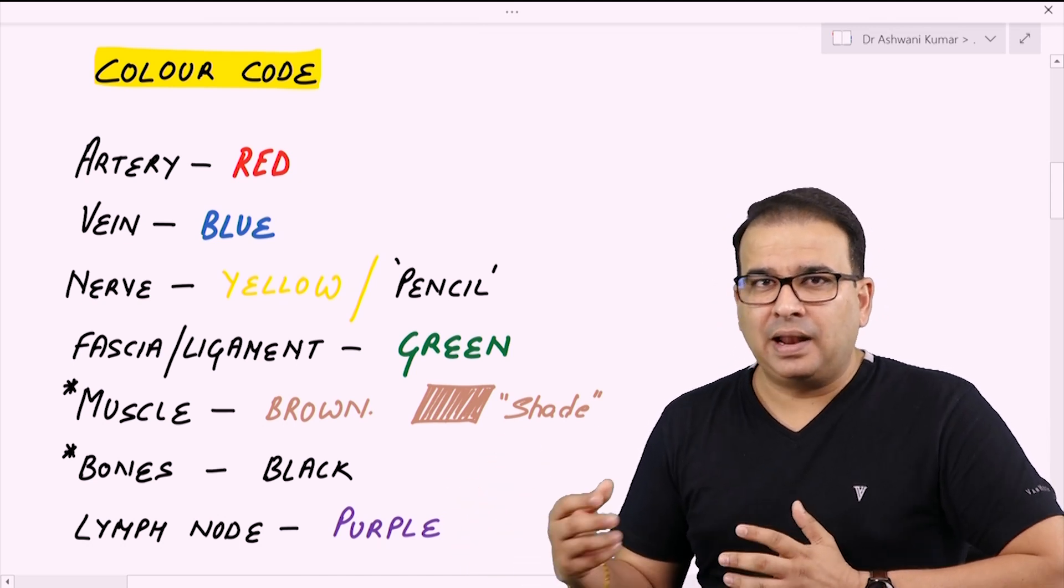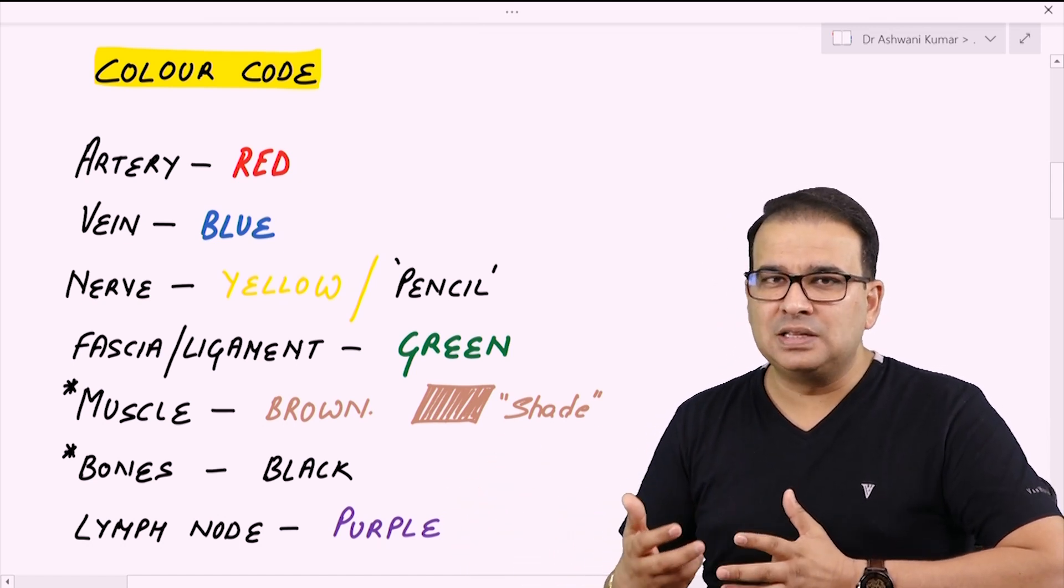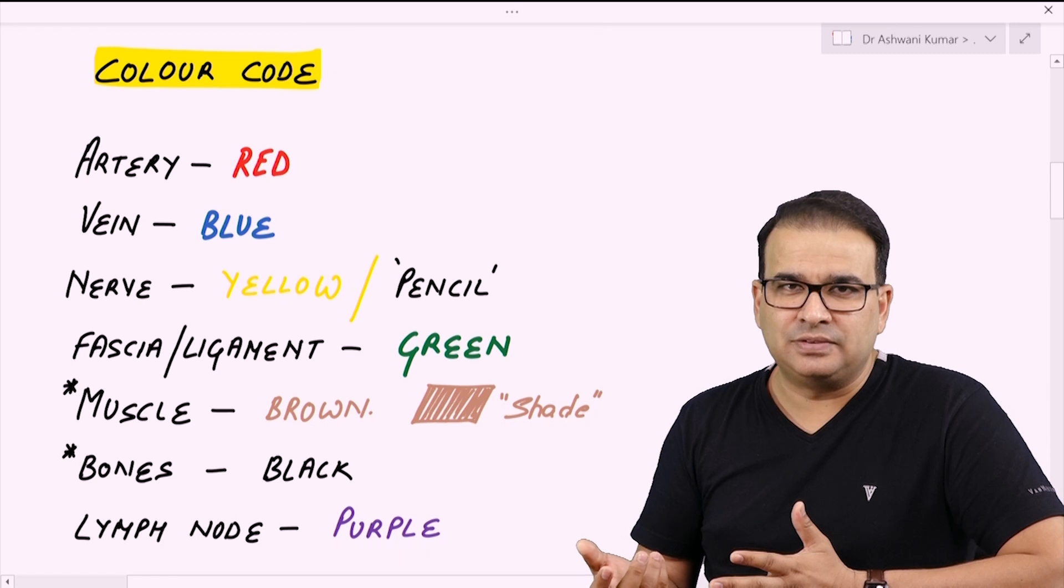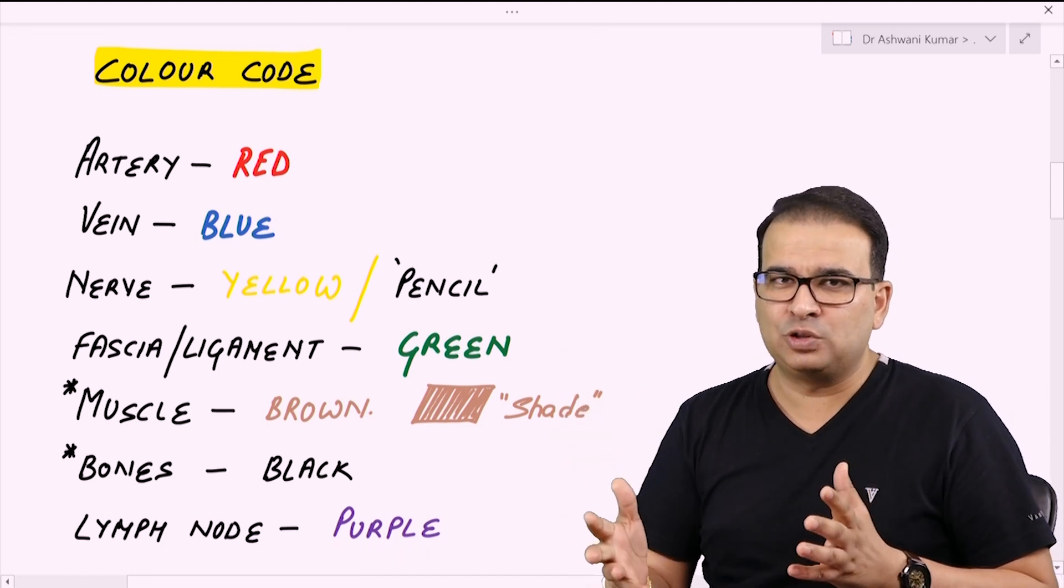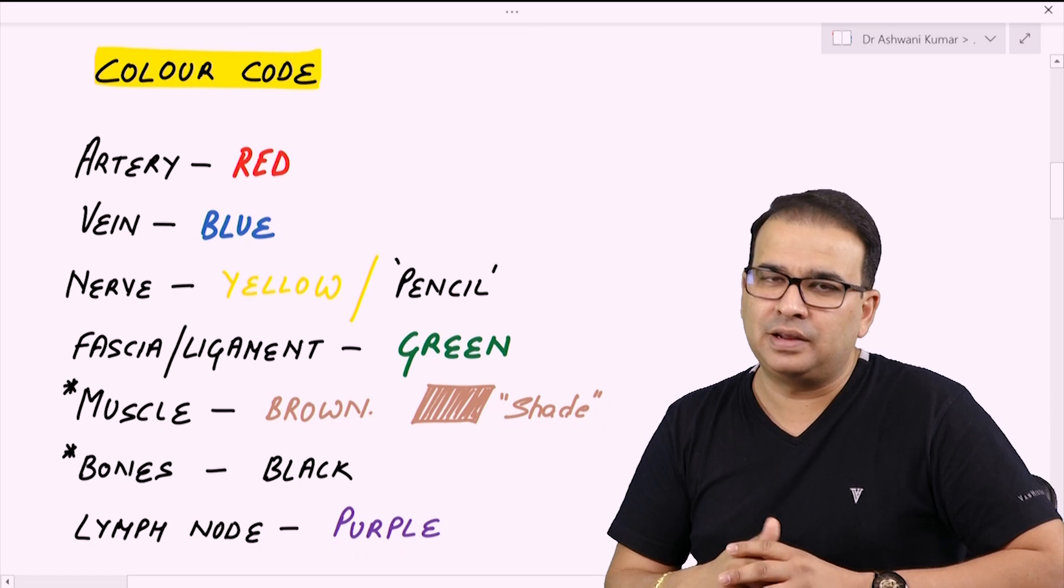Bones shown with black color, and again you don't have to fill any black or yellow color inside the bone. Just draw the outline and that is enough. If you are drawing a scapula, you just need to draw the outline of the scapula and that is more than enough.